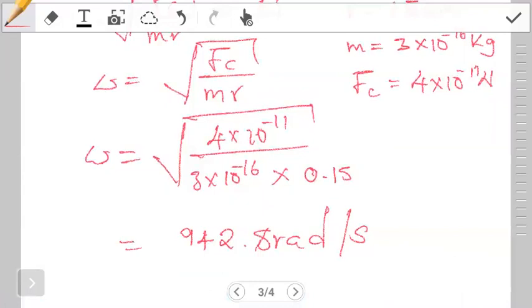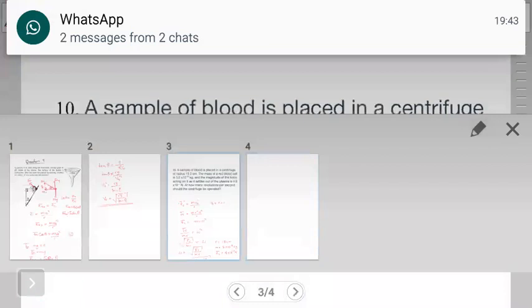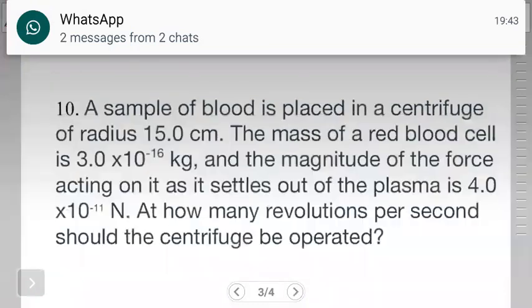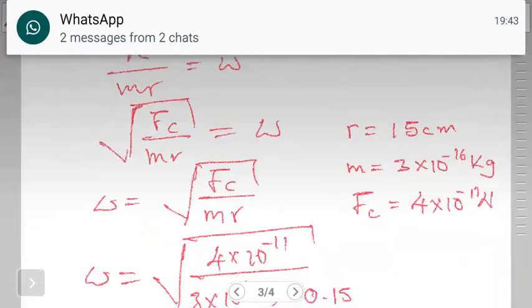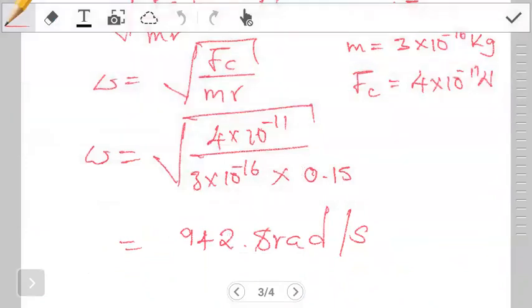But then the question wants the number of revolutions per second needed. What we have is in radians per second, so we need to convert this from radians per second to revolutions per second. I hope you guys know how to do this by now. You can quickly try it out if you didn't finish working out the question. We're trying to convert 942.8 radians per second, so just pause the video and try to convert it.